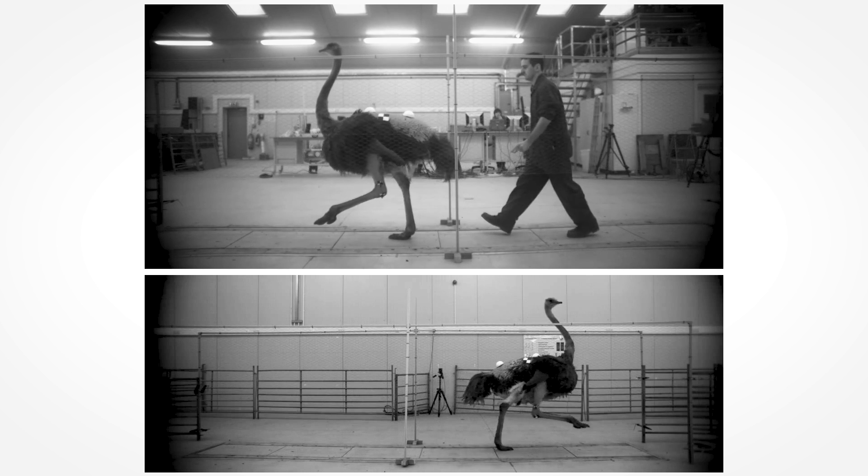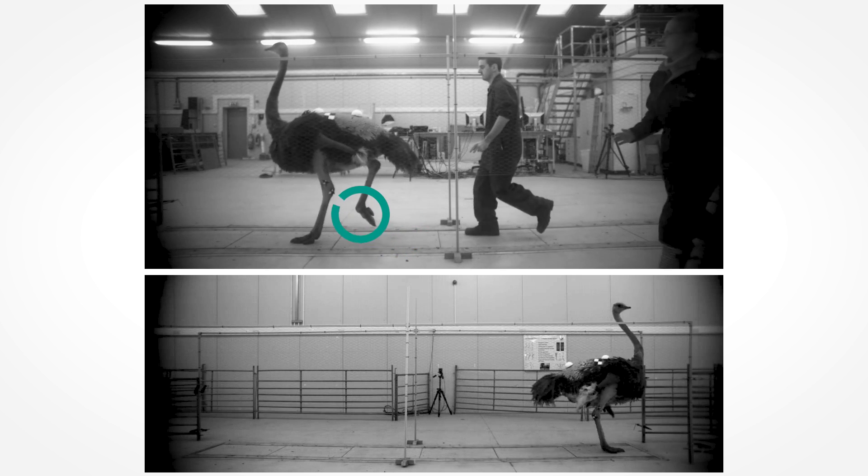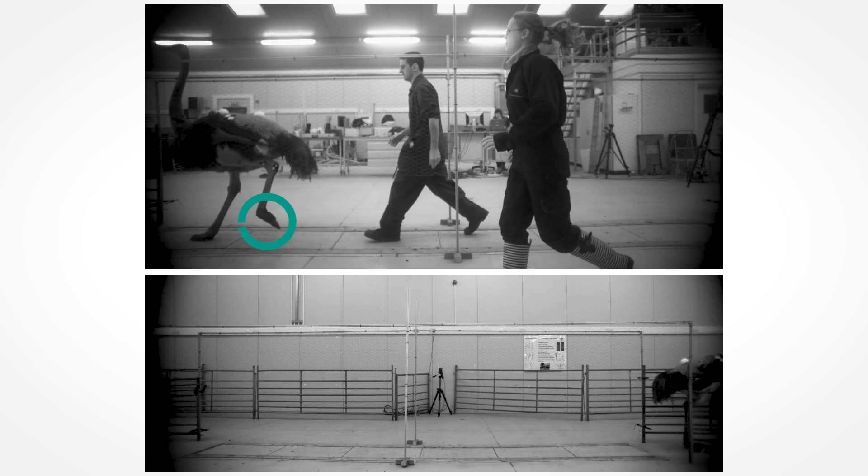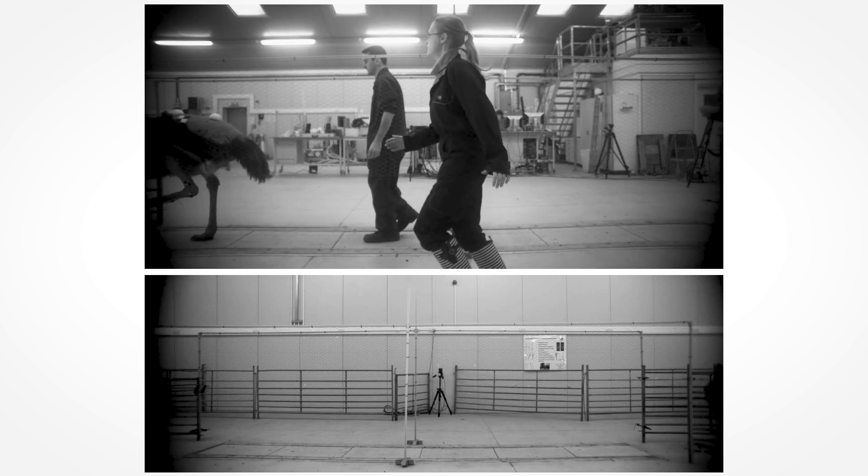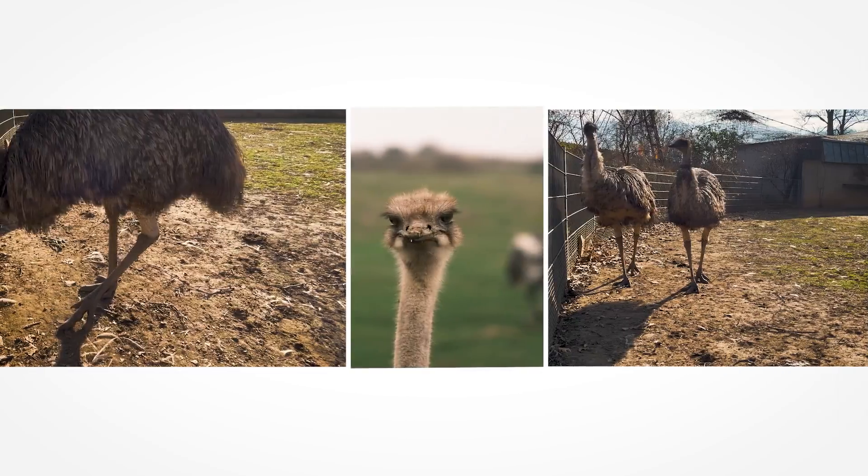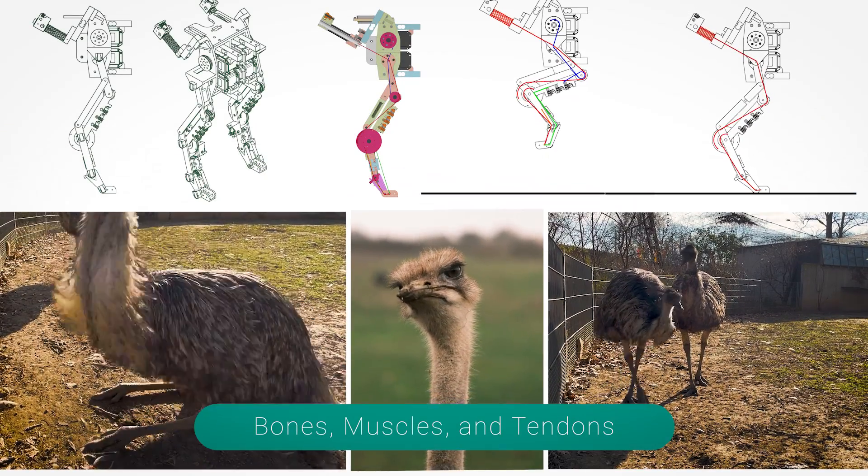Unlike humans, birds fold their feet back while pulling their legs up towards their bodies. Why do animals do this? Why is this foot movement energy-efficient when walking and running? And how can the structure of birds' legs with all their bones, muscles and tendons be transferred to walking robots?